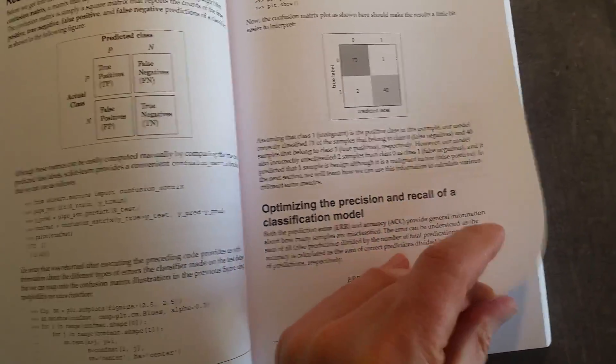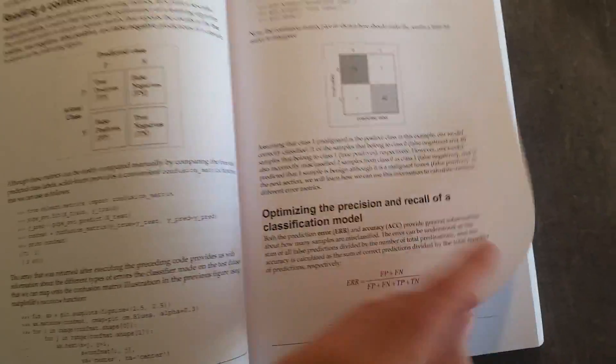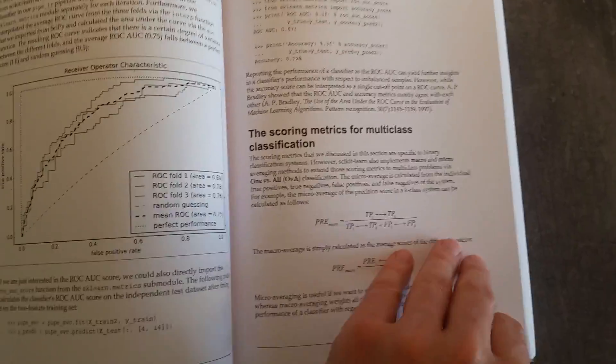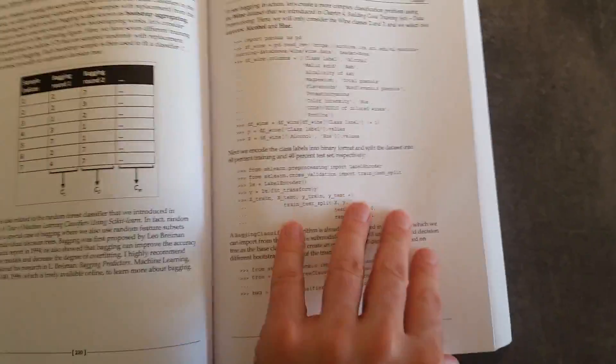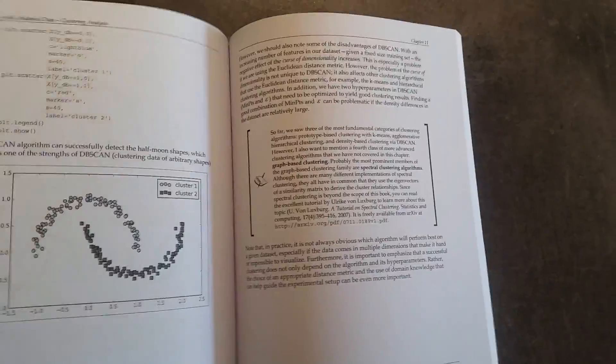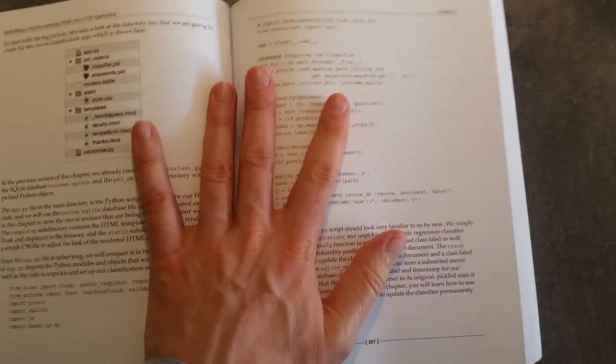So all in all, if you're new to machine learning and new to Python, then I would really recommend this book. It's aimed at, I would say, the beginner, but it takes you up to a reasonable level. Once you've got through this book, you will understand and have quite an insight into what machine learning is, how it works, and how to apply it.